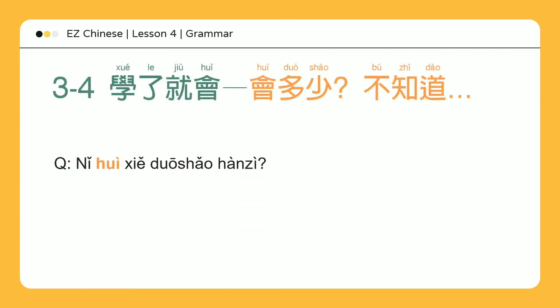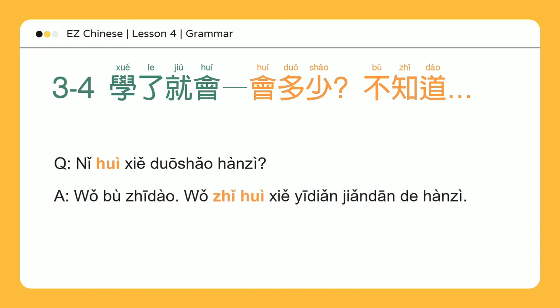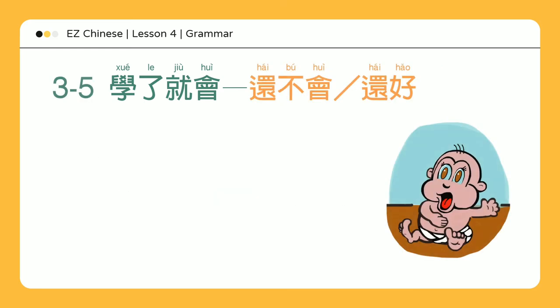你会写多少汉字? — How many characters do you know how to write? 我不知道 — I don't know. 我只会写一点简单的汉字 — I can only write a few simple characters. Does this child know how to walk?